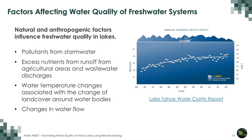There are several factors affecting water quality of freshwater systems, both natural and anthropogenic in origin. These include pollutants from storm water, excess nutrients from runoff from agricultural areas and wastewater discharges, water temperature changes associated with changes in land cover around water bodies, and climate change affecting water temperature and changes in water flow. All these factors can influence water quality of lakes.